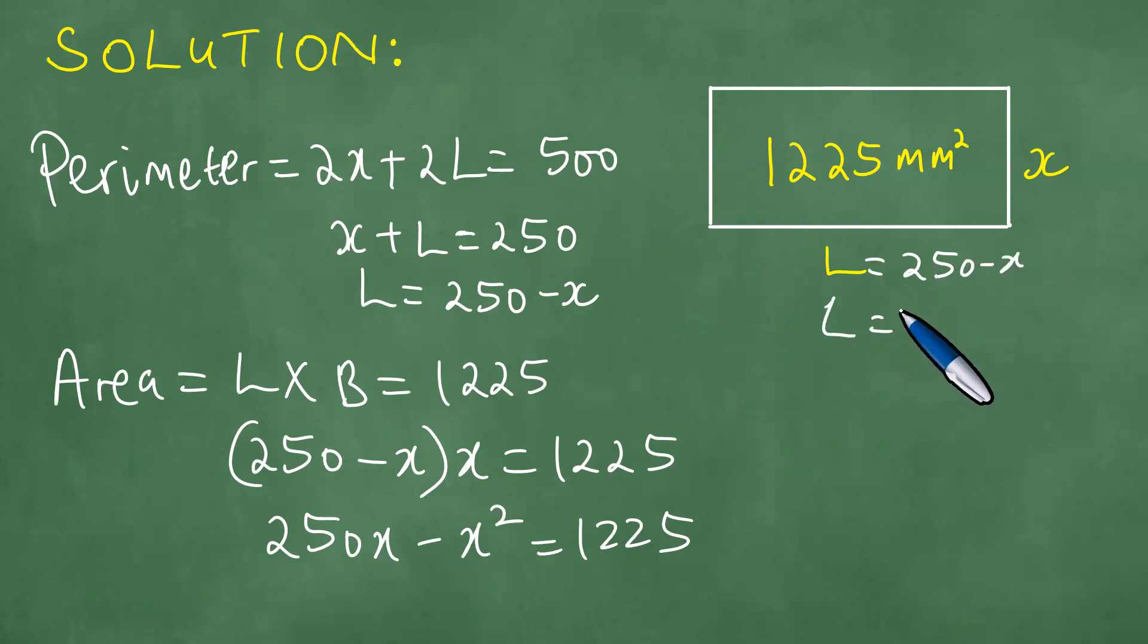So if you take 5, it is 250 minus 5, which is 245. That is the L. And this is 5, for example.